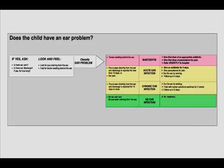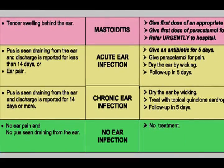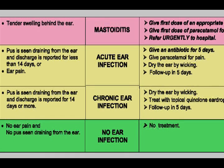The assess and classify chart helps the health worker identify ear problems due to ear infection. A child with an ear problem is assessed for ear pain, ear discharge, and if discharge is present, how long the child has had discharge, and tender swelling behind the ear — a sign of mastoiditis. There are four classifications for ear problems: mastoiditis, acute ear infection, chronic ear infection, and no ear infection.